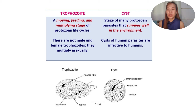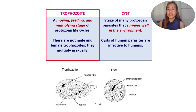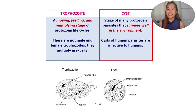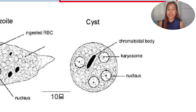When studying parasites, we need to understand the difference between a trophozoite and a cyst. A trophozoite is the moving, feeding, and multiplying stage of protozoan life cycles. There are no male and female trophozoites — they multiply asexually. Cysts, on the other hand, are the stage of many protozoan parasites that survives well in the environment. Cysts of human parasites are what infect humans.